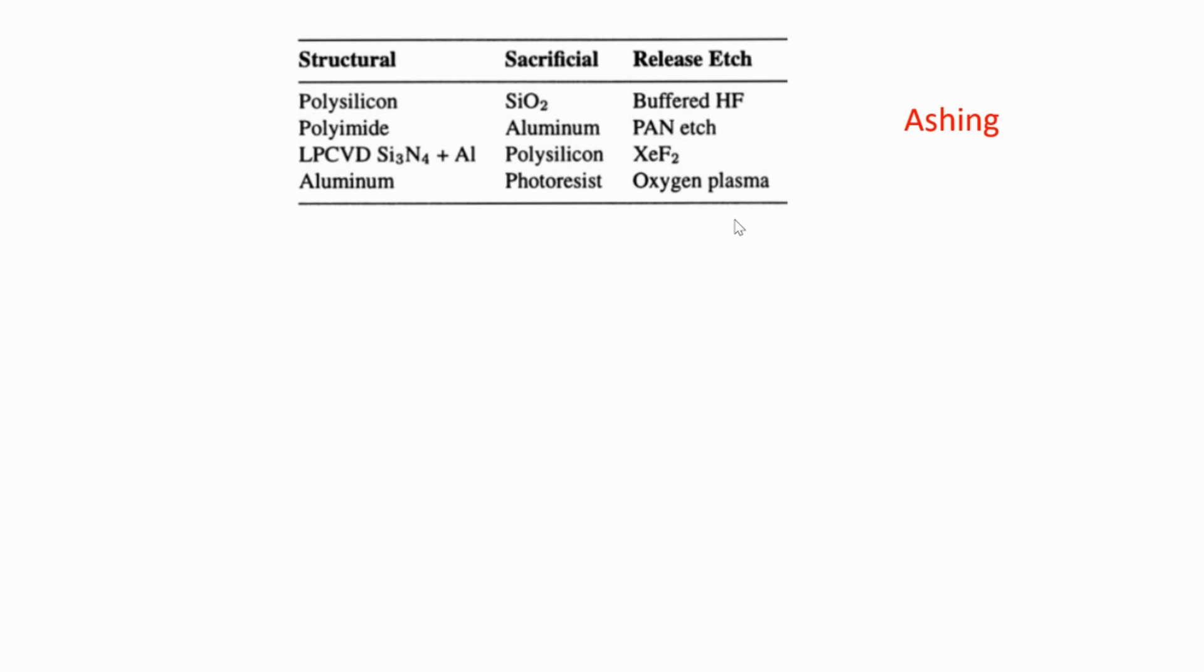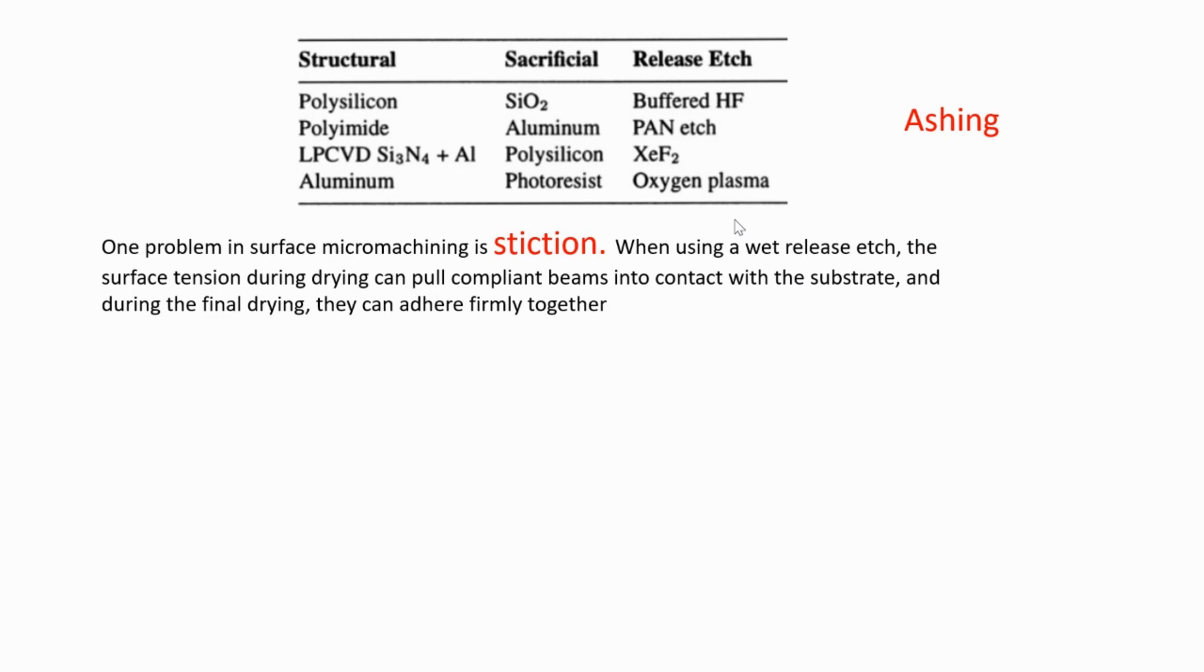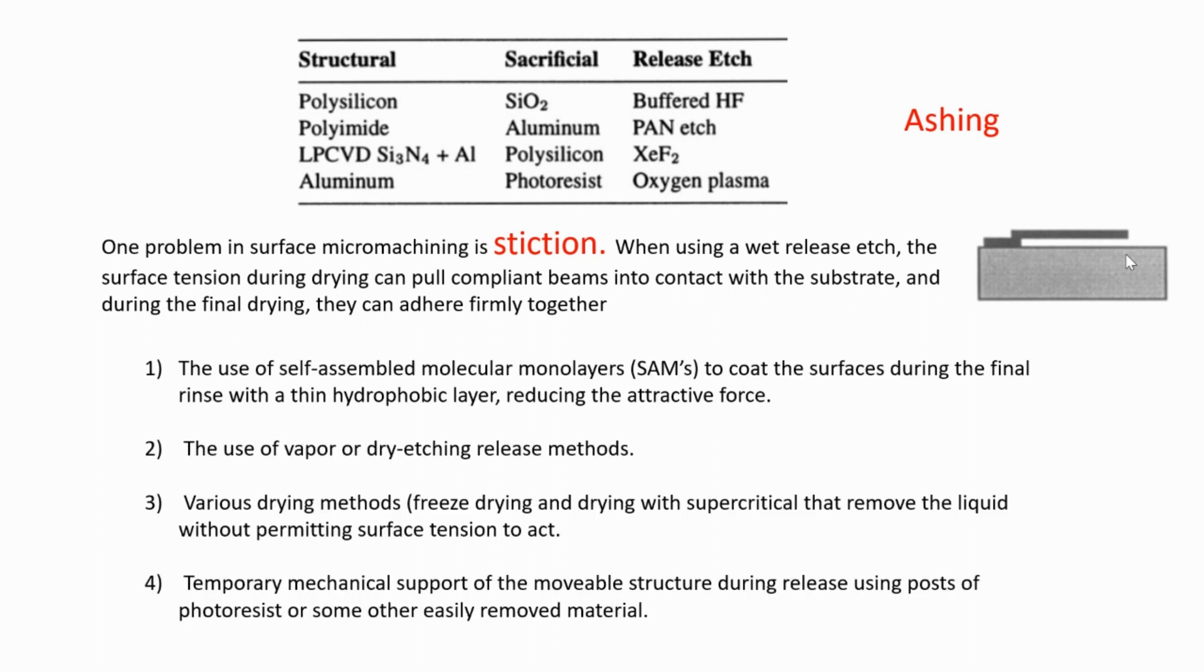One major problem in surface micromachining is stiction. When using a wet release etch, the surface tension during drying can pull compliant beams into contact with the substrate, and during the final drying they can adhere firmly together. This means your beam will stick to the substrate, which is not something you want.